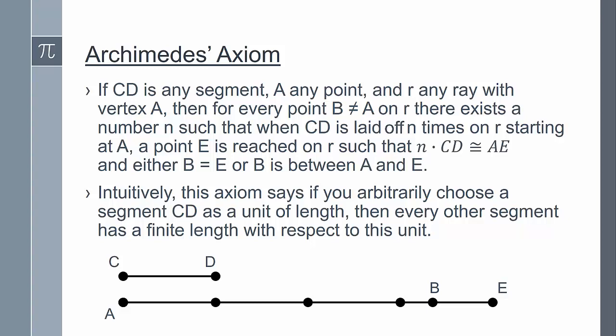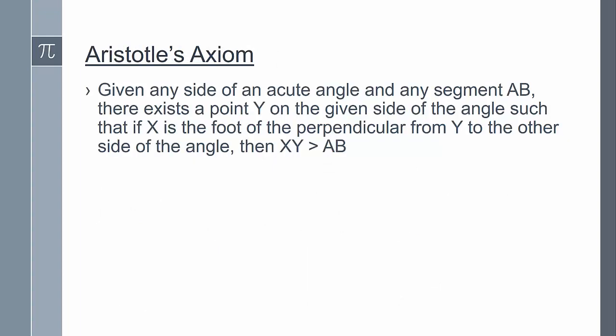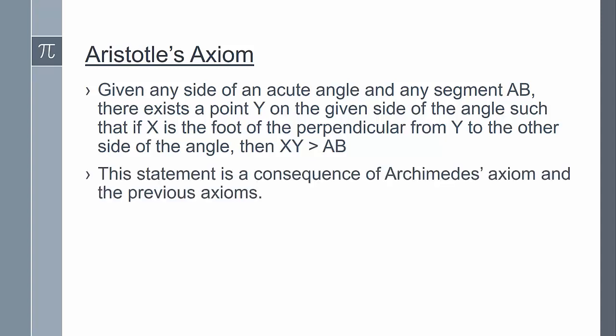So the next axiom is going to be a consequent of Archimedes axiom. This is Aristotle's axiom. It states that given any side of an acute angle and any segment AB, there exists point Y on the given side of the angle such that if X is the foot of the perpendicular from Y to the other side of the angle, then XY is greater than AB. So the idea is if we start with any point Y on a given side of an angle, then as Y recedes endlessly from the vertex V of the angle, the perpendicular segment XY increases indefinitely. As I mentioned, this statement is actually a consequence of Archimedes axiom and all the previous axioms.